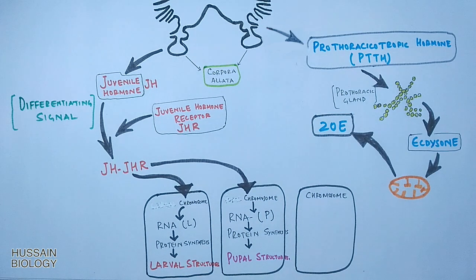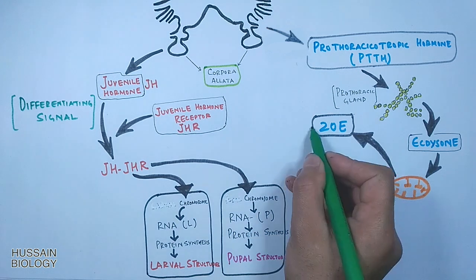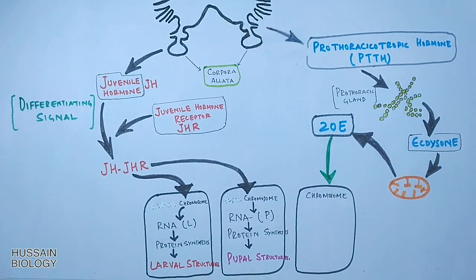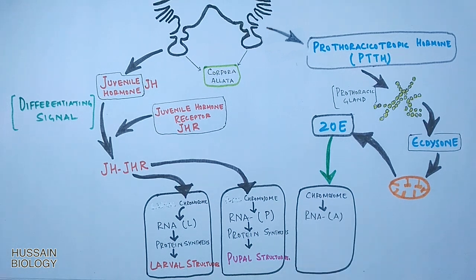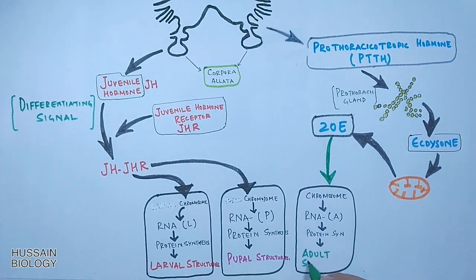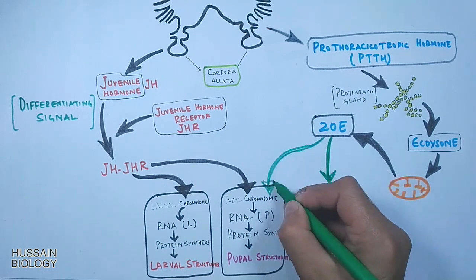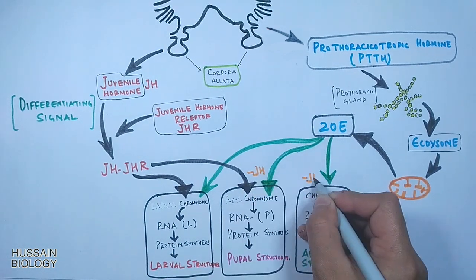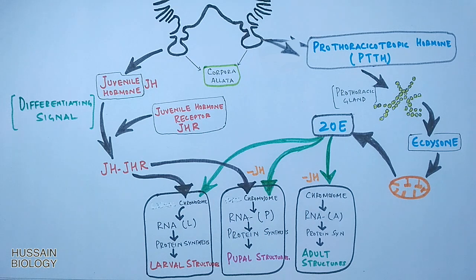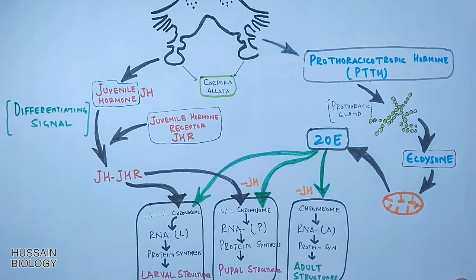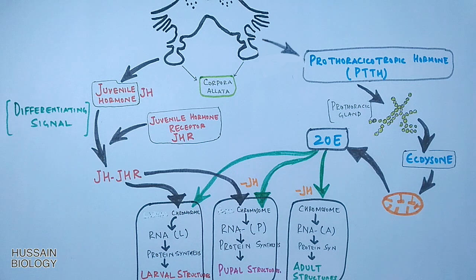20-hydroxyecdysone works on all three molting cases. Specifically, it drives pupal and adult molts, but only when juvenile hormone is present in low concentrations. It drives the expression of genes leading to adult and pupal structures only under these low juvenile hormone conditions. Once juvenile hormone concentration rises, 20-hydroxyecdysone shows no effect on molts and only larva to larva molts are driven.